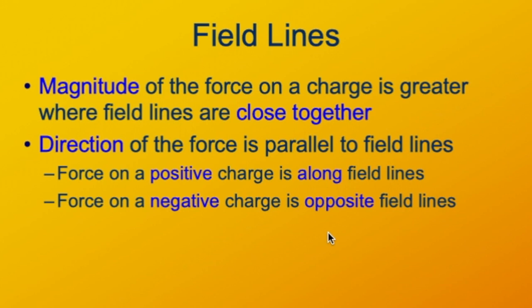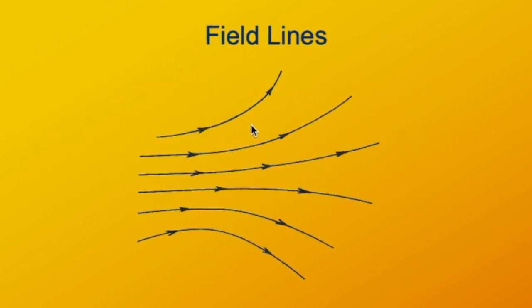The direction of the force is parallel or tangent to the field lines. The force on a positive charge would be in the same direction as the field lines, and on a negative charge it would be opposite. So here in the field line diagrams, a positive charge would be pushed away, but a negative charge gets the opposite treatment — it's going to be pulled in the opposite direction, toward the left in this diagram.